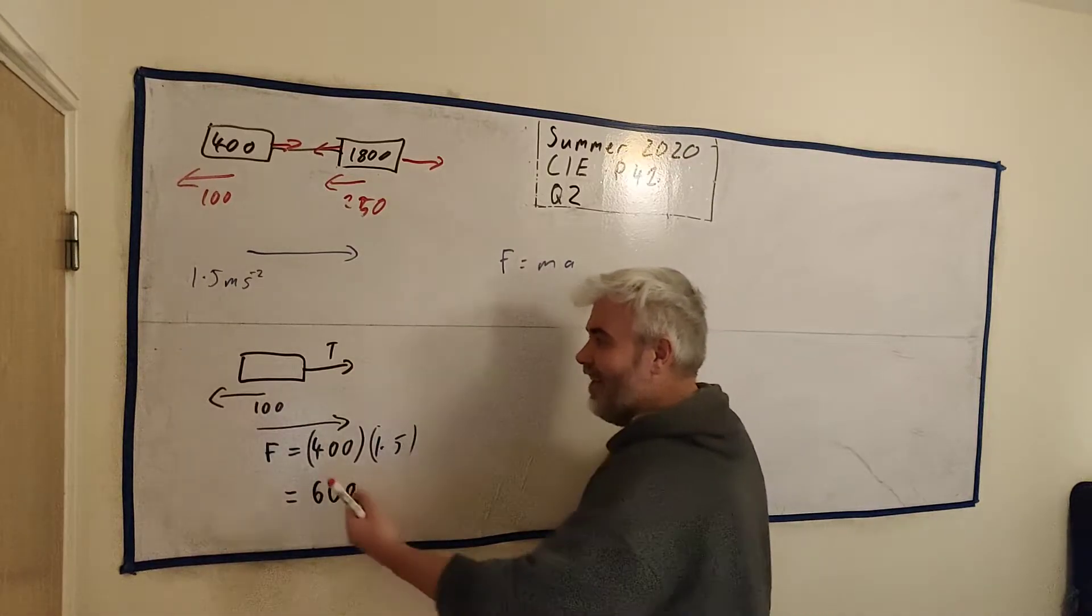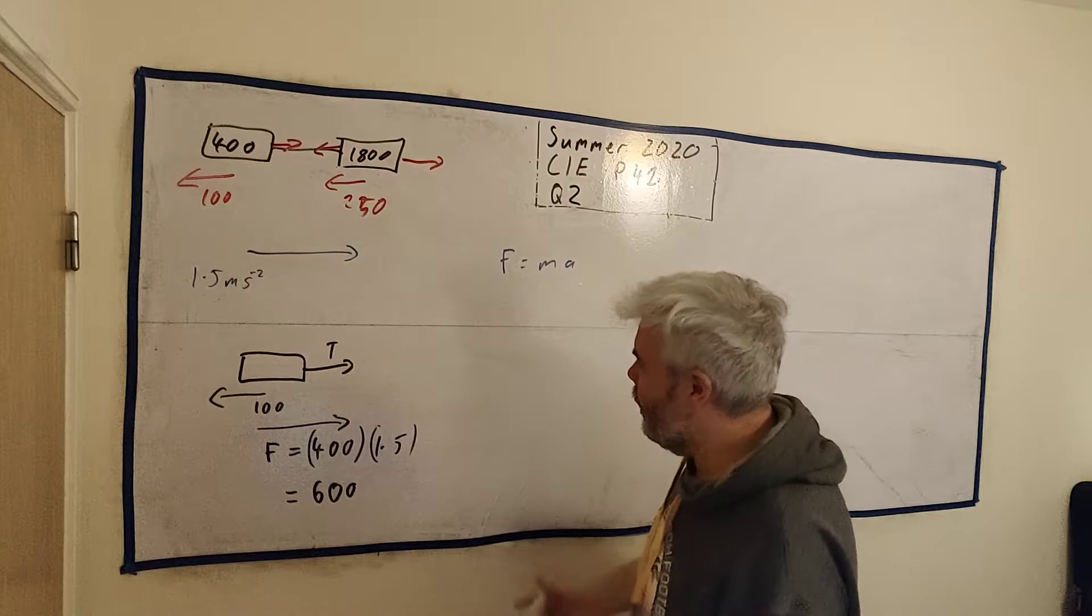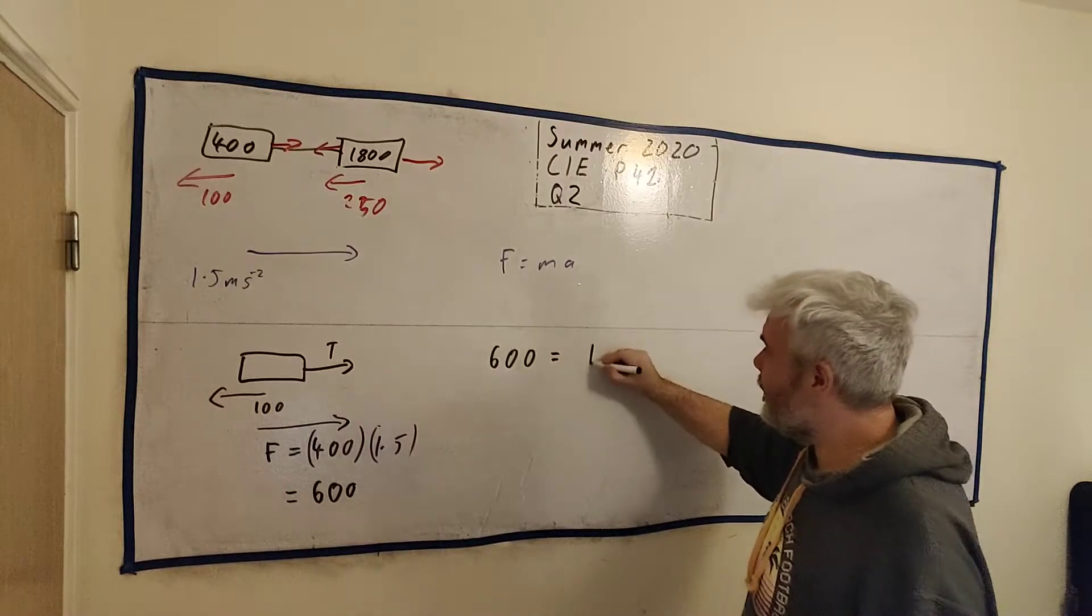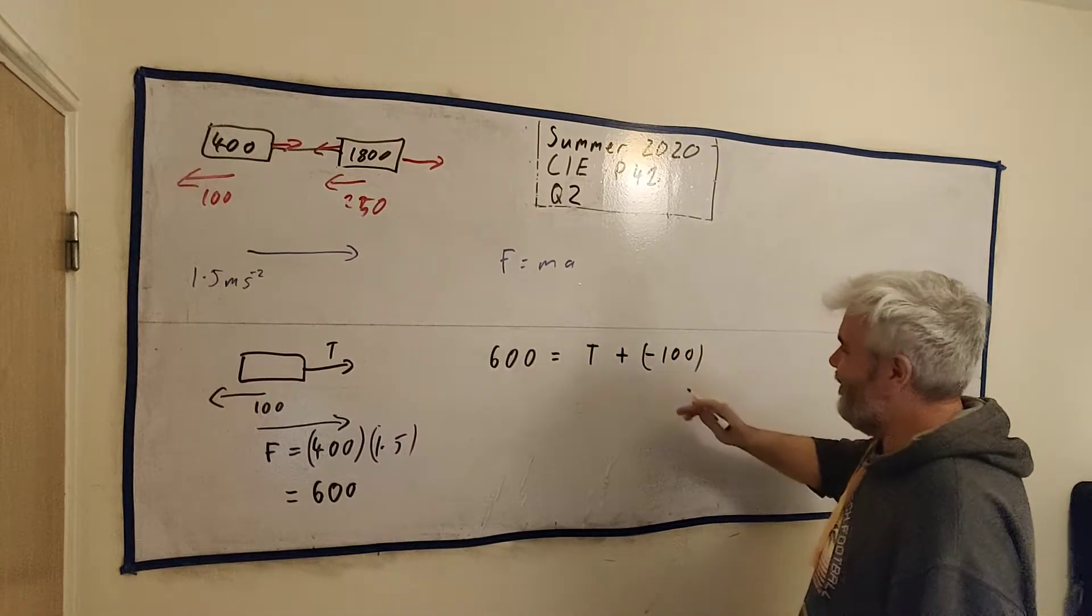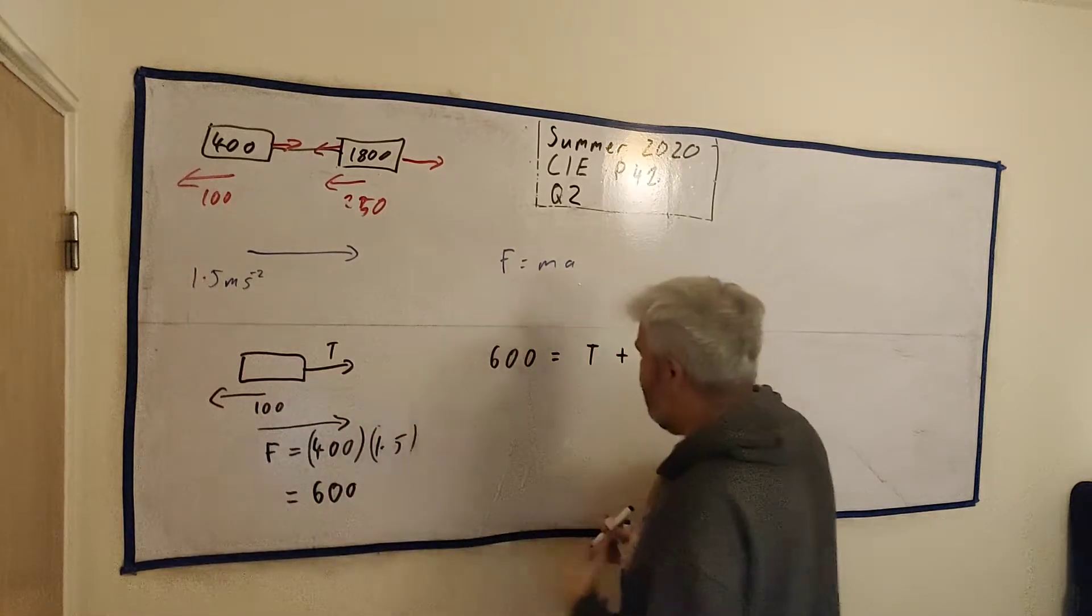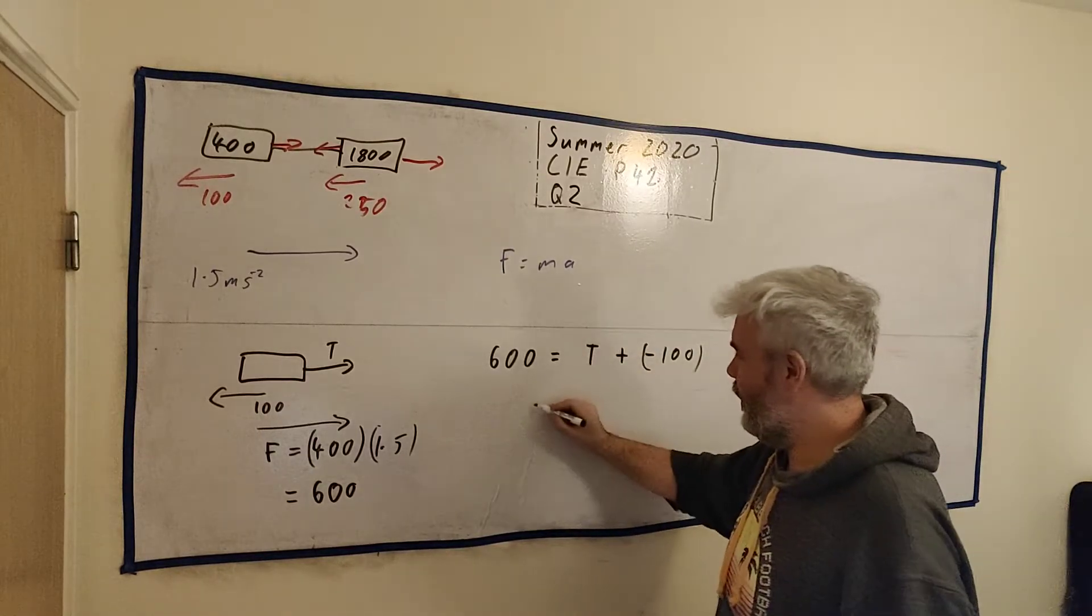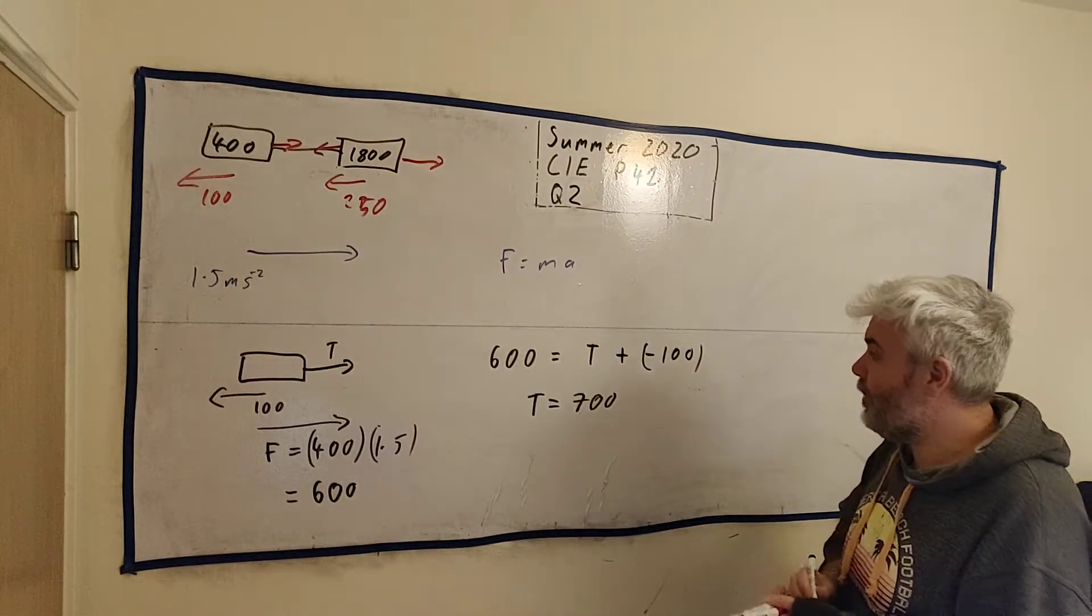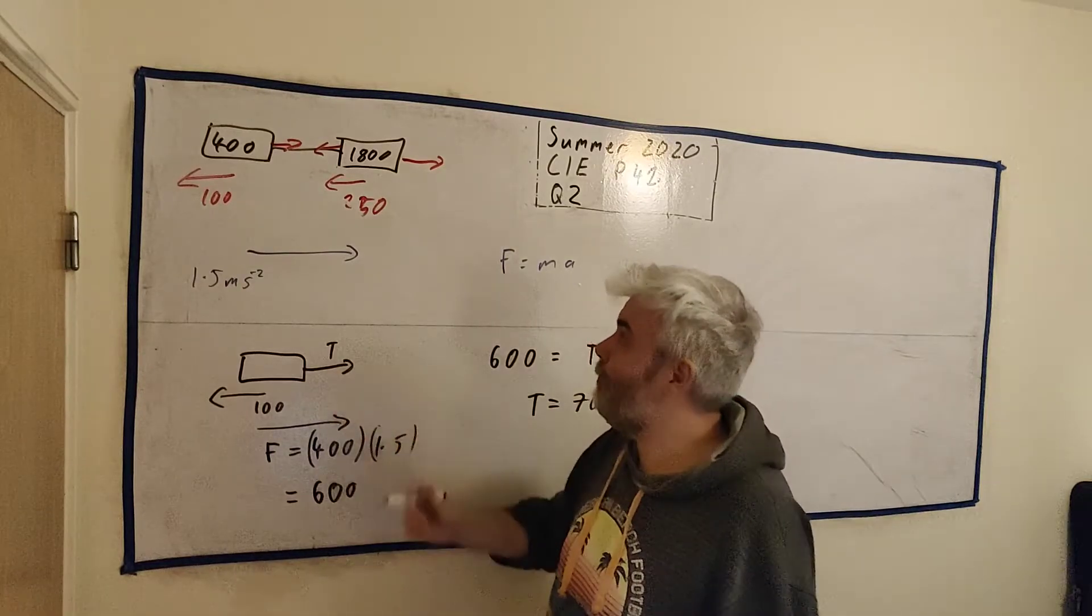So I know these two forces add together to get 600 forces this way. So you could now just say T is 700. But just to put it in a more maths way, I would write something like this. 600, the total, is equal to T plus minus 100. This 100 force is a minus force, it's going left. And rearrange this, we get T is equal 700. So the tension on this bar must be 700 newtons. And that's just by looking at the single world of the trailer.